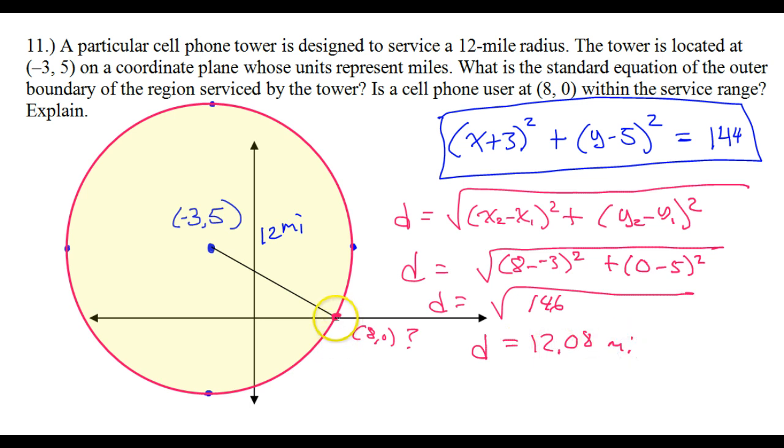So that means this point is just a little bit bigger. You know, this distance is a little bit bigger than the radius, which is 12 miles. This is like 12.1 miles. So that's going to put it just barely outside the circle. That's why it was so hard to tell.